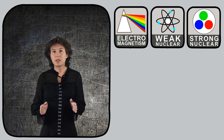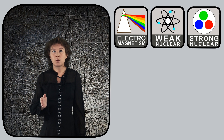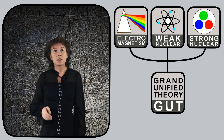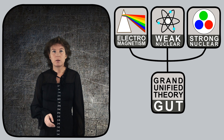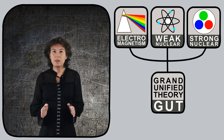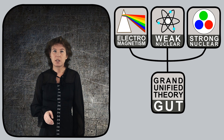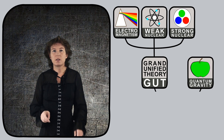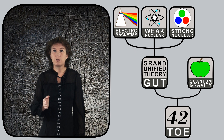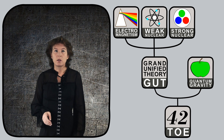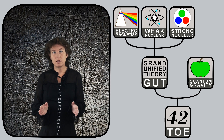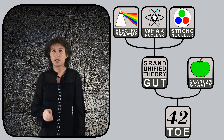If you combine the three forces in the standard model into only one force from which you can derive the standard model, that is called a grand unified theory, or GUT for short. That's not a theory of everything either. If you have a theory from which you can derive gravity and the three forces of the standard model, that is called a theory of everything, or TOE for short. So a theory of everything is both a theory of quantum gravity and a grand unified theory.